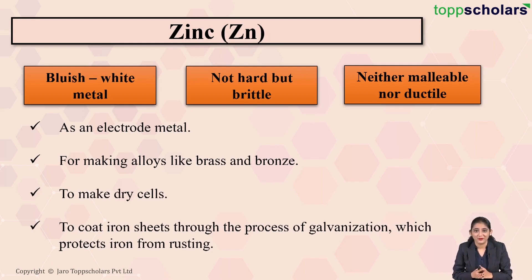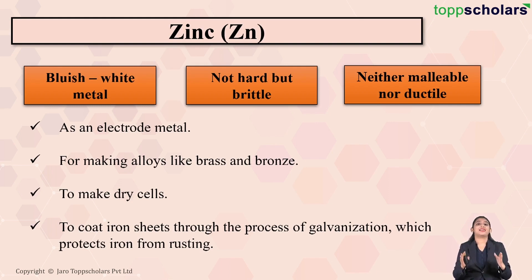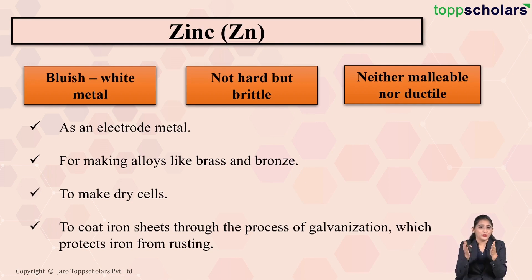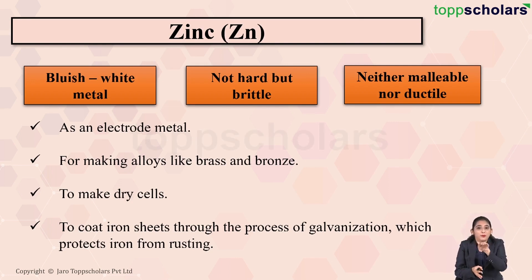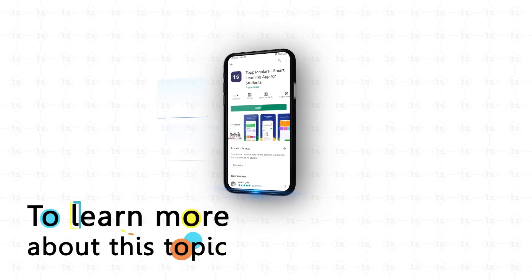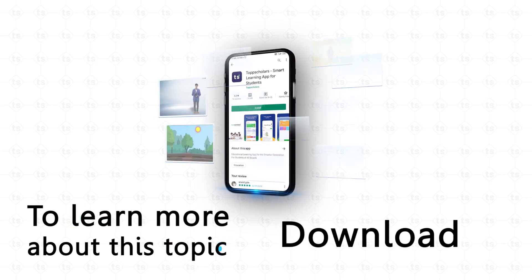In galvanization, iron sheets are coated with a thin layer of zinc, which prevents the rusting of iron because the iron no longer comes in direct contact with the atmosphere. By putting a coating of zinc over the iron sheet, we break the contact of the metal from the atmosphere. To learn more about this topic, download the Top Scholars app.